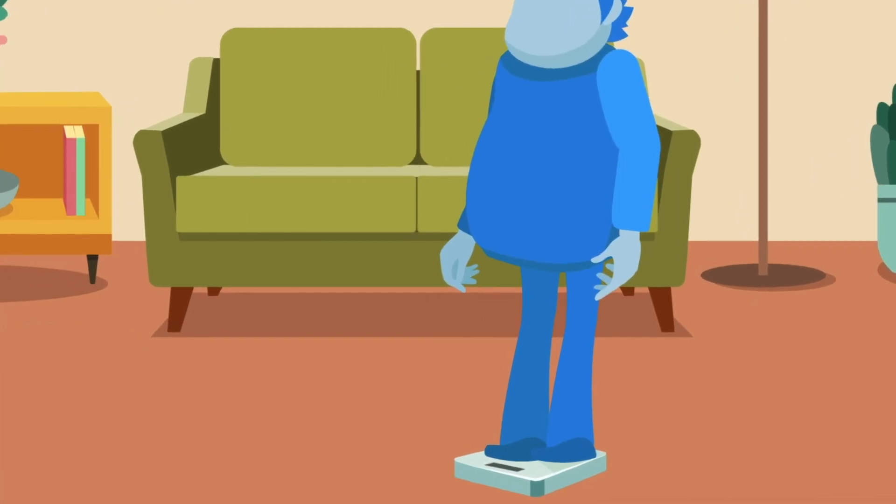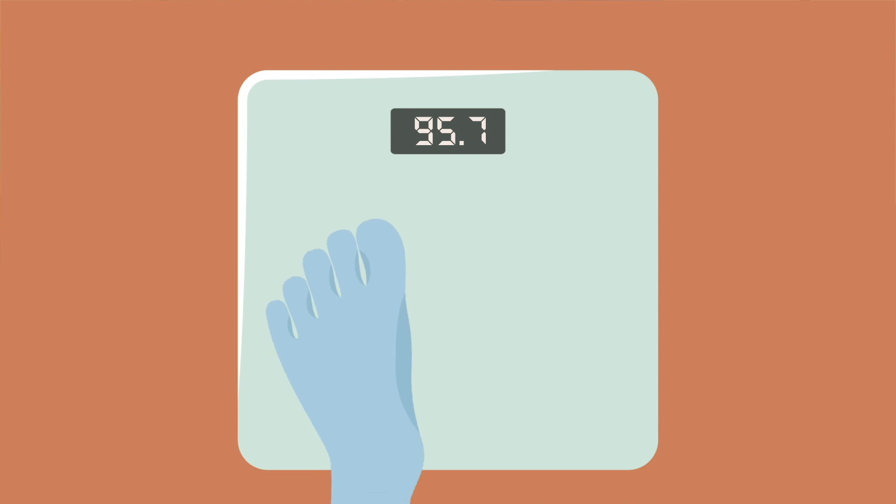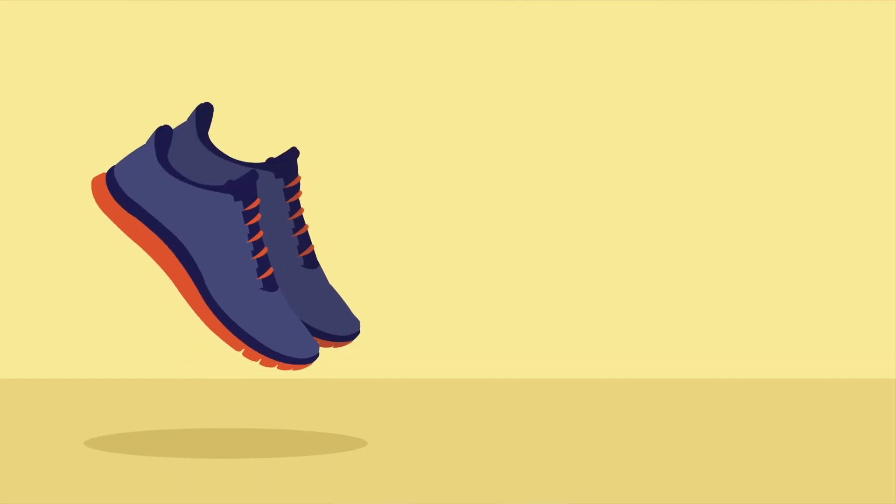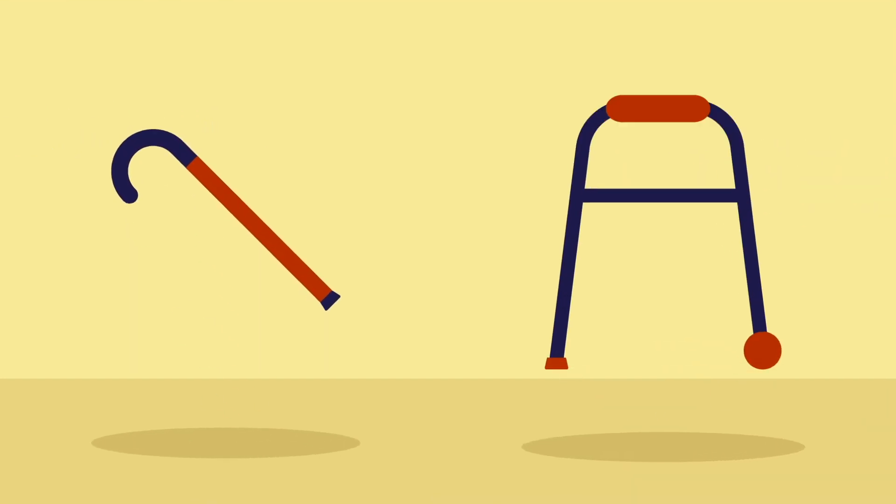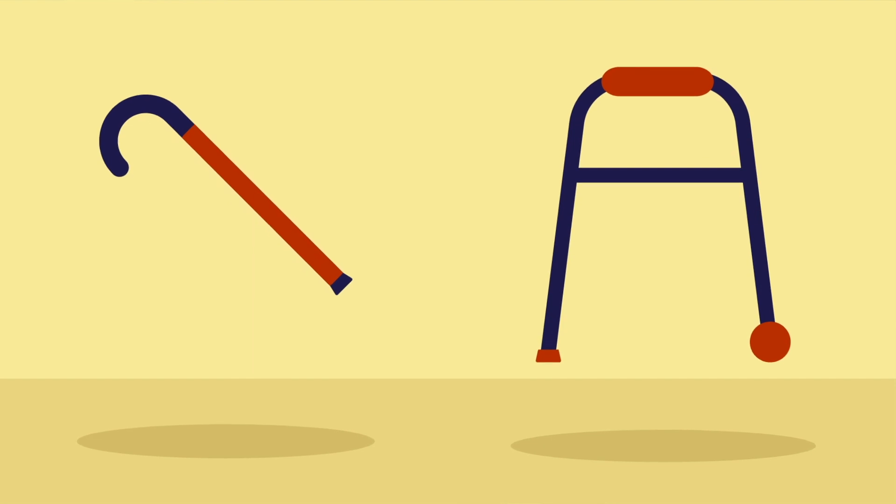In people who are overweight, losing weight helps improve joint pain. Even losing a few kilograms of weight can make a big difference. It's also important to have comfortable shoes, and you may use braces to help support weak joints. Use extra support with a walking stick or walker if needed. This can help reduce the stress and avoid falls.